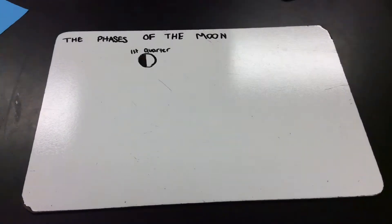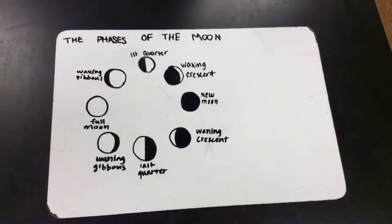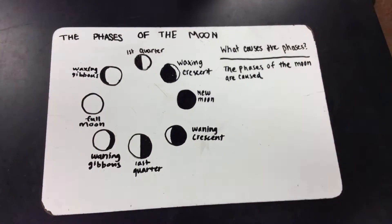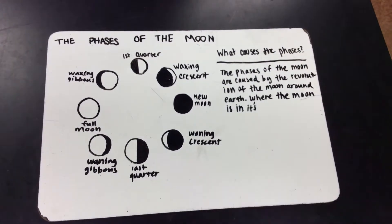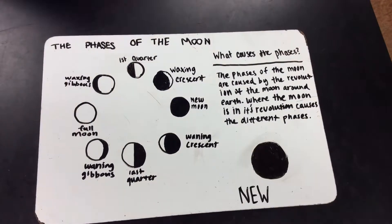The phases of the moon. What causes the phases? The phases of the moon are caused by the revolution of the moon around the earth. Where the moon is in its revolution causes the different phases.